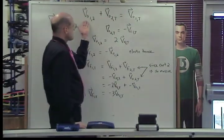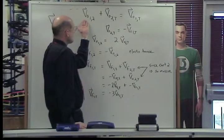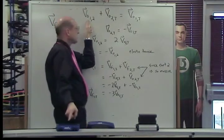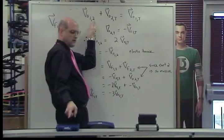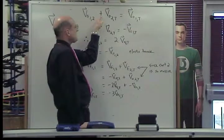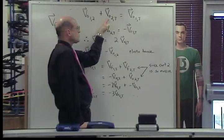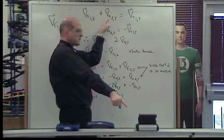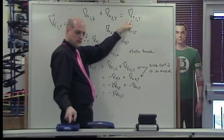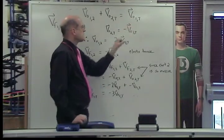We start with this expression here. This gives us the original velocity of card 1 relative to card 2. If you add that to the original velocity of card 2 relative to the track, you will get the original velocity of card 1 relative to the track.